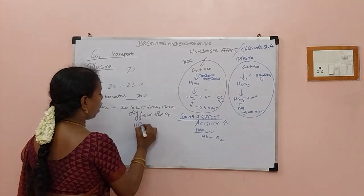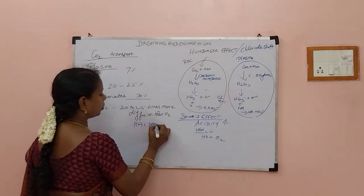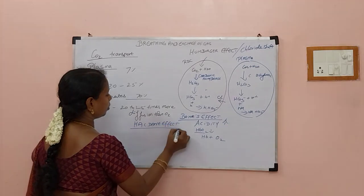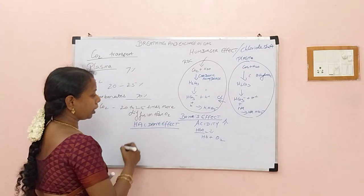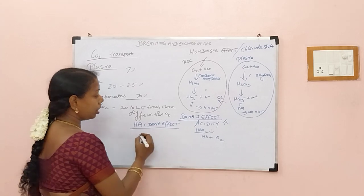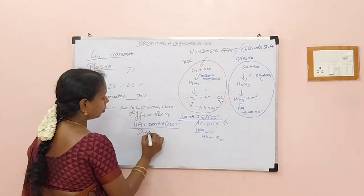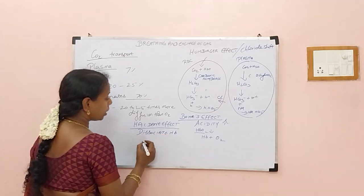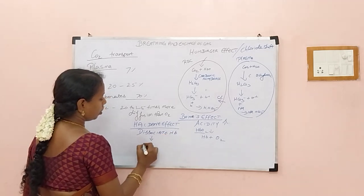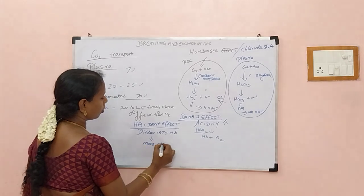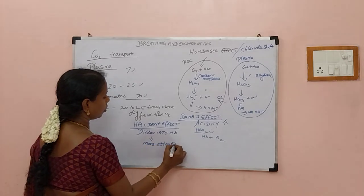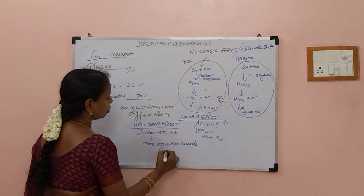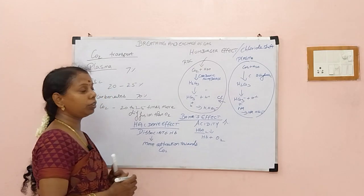There is one more effect called the Haldane effect. In the Haldane effect, the dissociated hemoglobin has more attraction towards CO2, so it will bind with CO2.